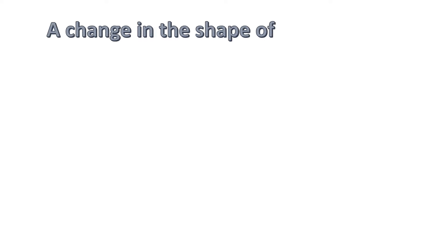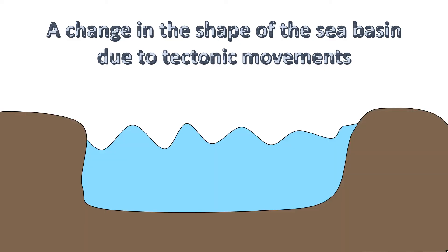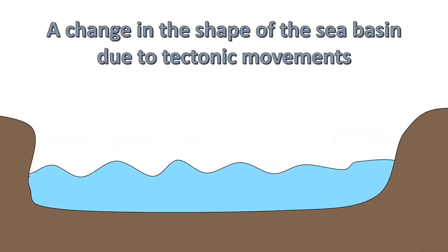Eustatic sea level change can also be caused by changes in the shape of the sea basin due to tectonic movements of the earth's crust. This then changes the volume of water able to be held in the ocean. For example, sea floor spreading increases the size of the sea basin, leading to a greater volume, therefore sea level falls.